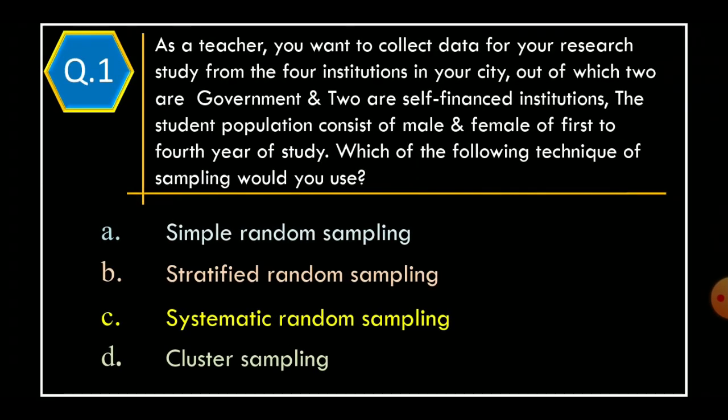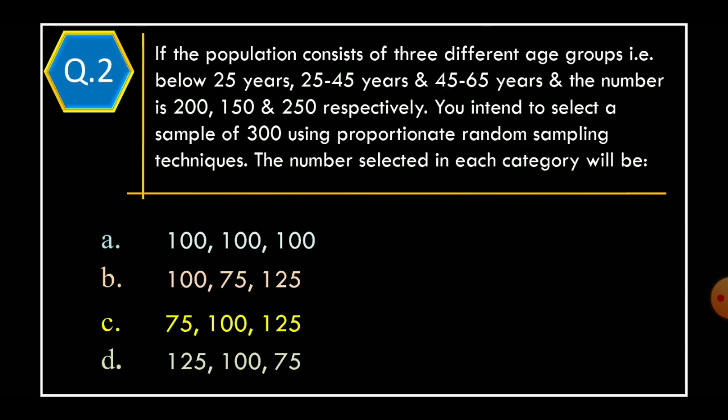Question 1. As a teacher, you want to collect data for your research study from the four institutions in your city, out of which two are government and two are self-financed institutions. The student population consists of male and female of first to four years of study. Which of the following techniques of sampling would you use? Option A, Simple Random Sampling. Option B, Stratified Random Sampling. Option C, Systematic Random Sampling. Option D, Cluster Sampling. And correct option is Option B, Stratified Random Sampling.